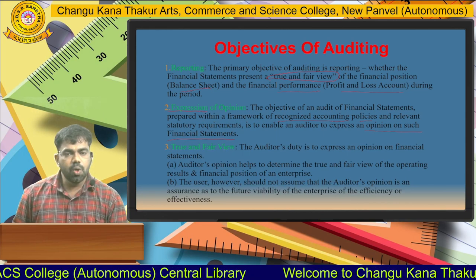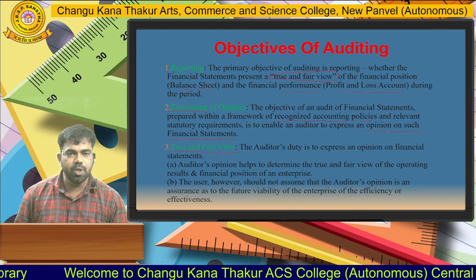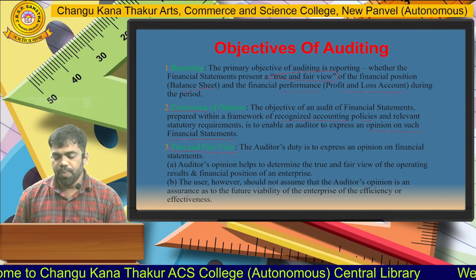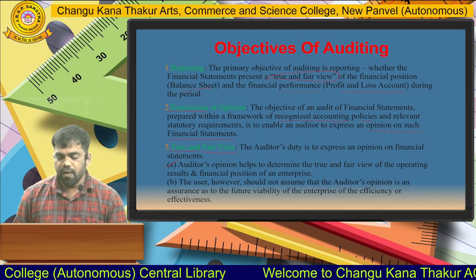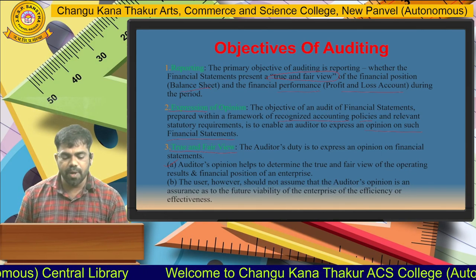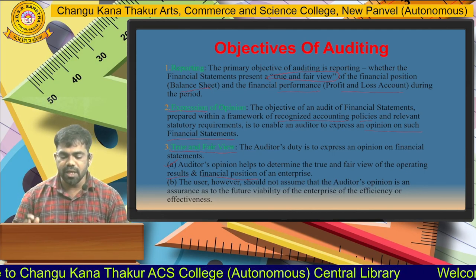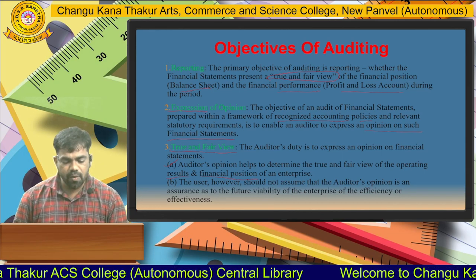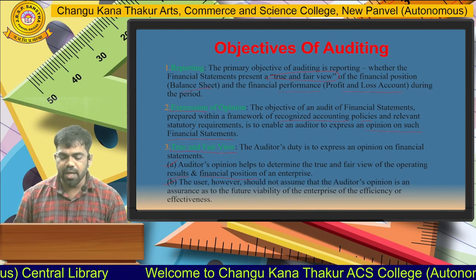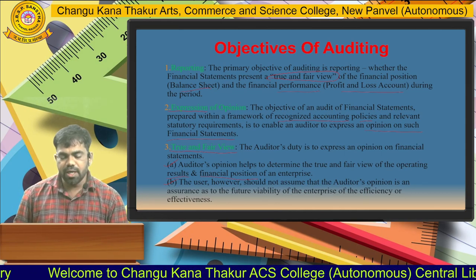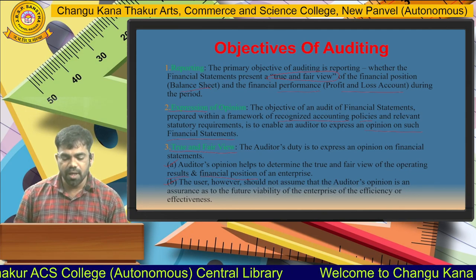The third objective is true and fair view, which is very important. Whatever presentation is made as an audit report must be true and fair. The auditor's opinion helps determine the true and fair view of operating results of an enterprise — all financial positions, results, and transactions done throughout the year must be presented as per the evidence available. However, users should not assume that the auditor's opinion is an assurance as to future viability, efficiency, or effectiveness. The audit report is done for only one year and cannot be assumed beneficial for further years.